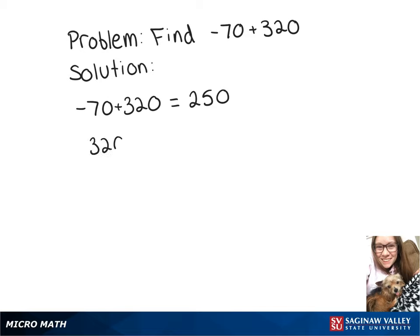We could also think of this using the commutative property. So if we just flip those numbers around, we get 320 minus 70, which again is 250.